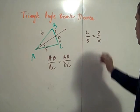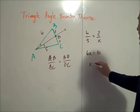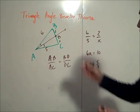And then you can solve this proportion. You would find that 6x is equal to 10. Divide both sides by 6 to find that x is 5 thirds. So that's how the theorem works.